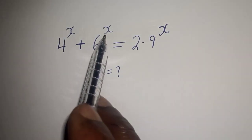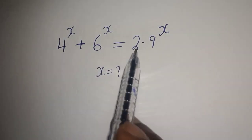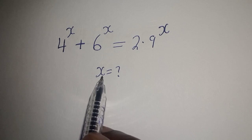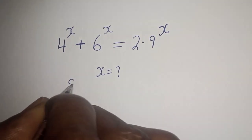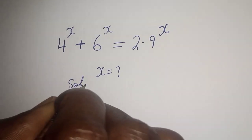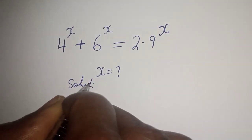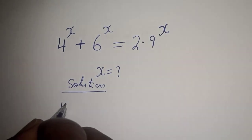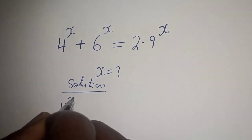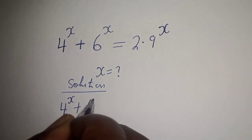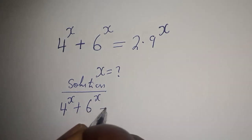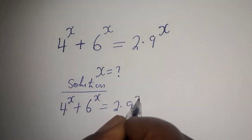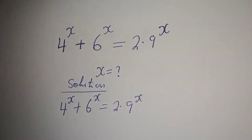4 to the power s plus 6 to the power s is equal to 2 multiplied by 9 to the power s. What is the value of s?